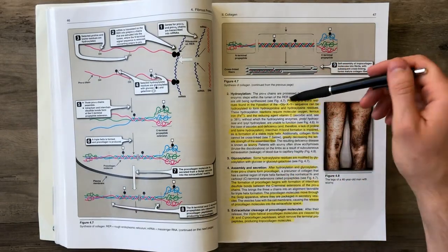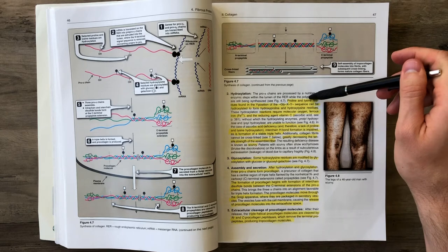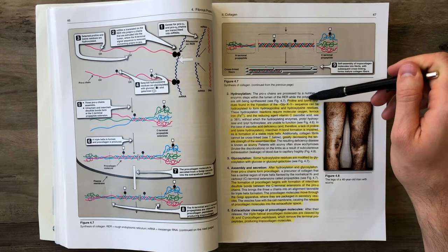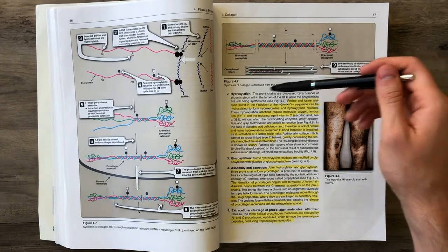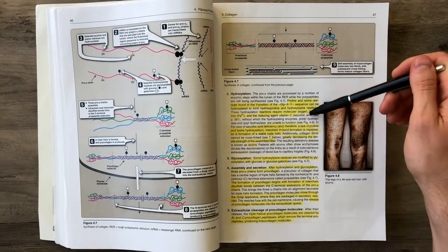These alpha chains then get hydroxylated. That occurs to our prolines and lysine amino acids within those polypeptide chains. But importantly, in order to hydroxylate these amino acids, we need vitamin C and iron.